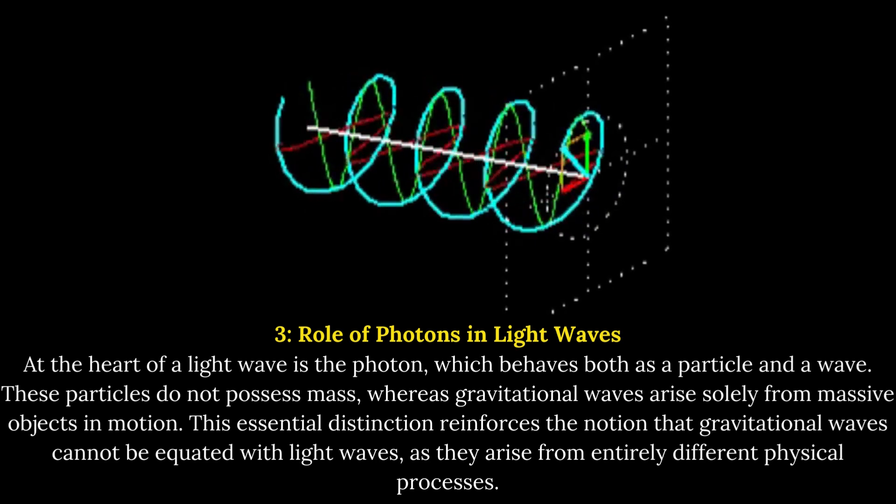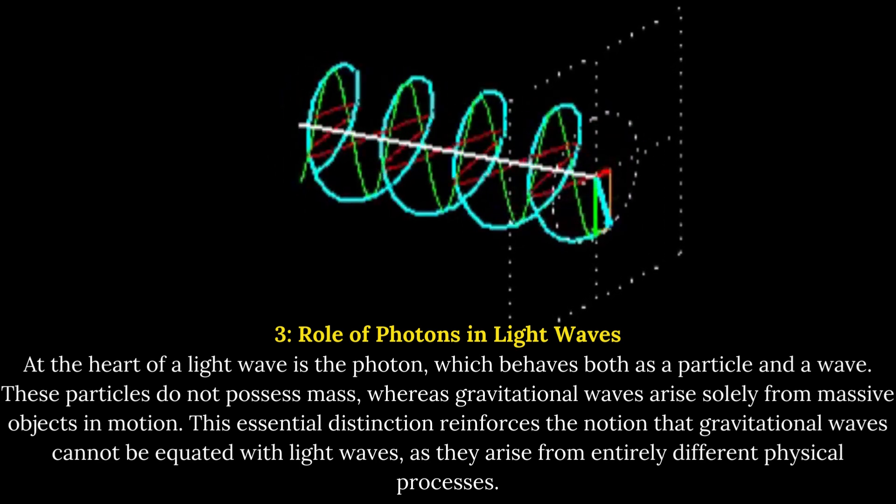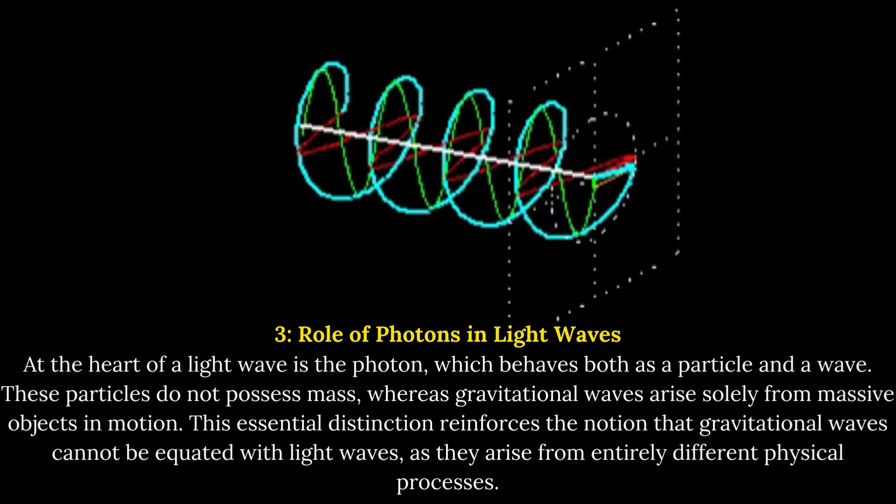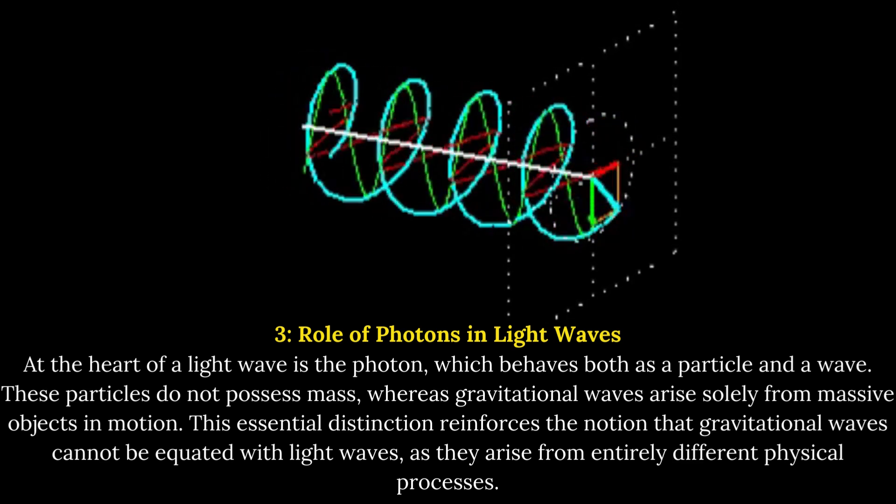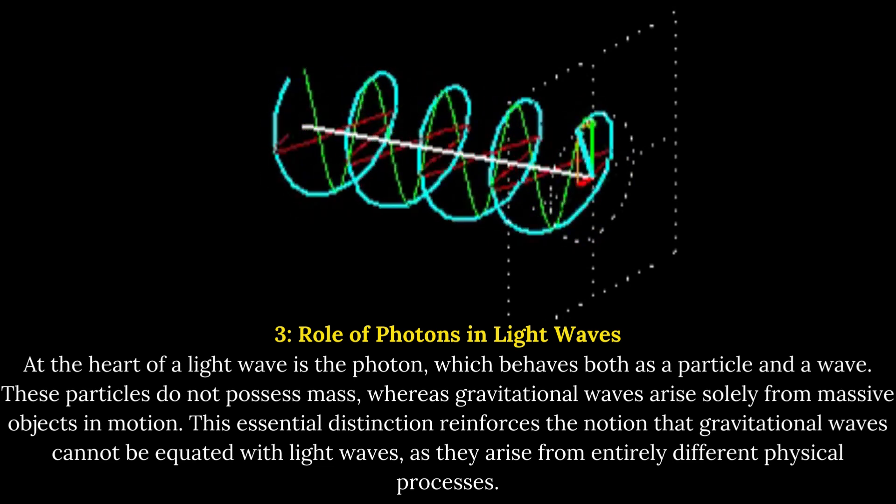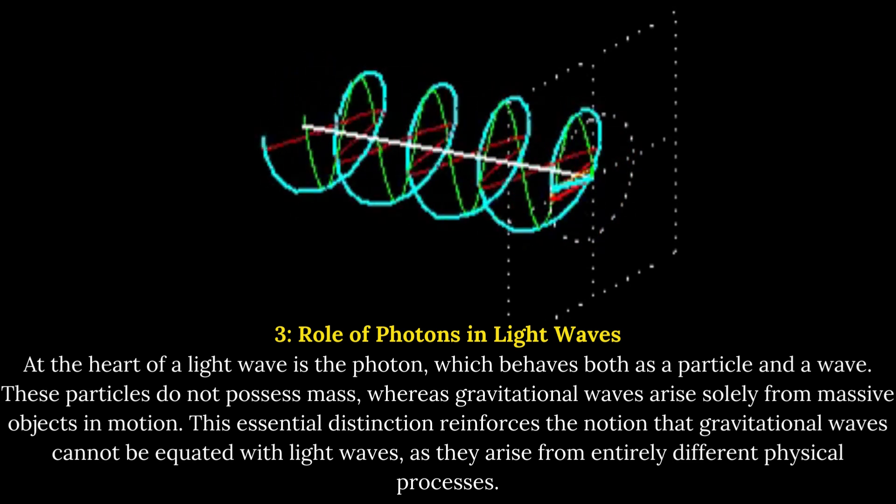Role of Photons in Light Waves. At the heart of a light wave is the photon, which behaves both as a particle and a wave. These particles do not possess mass, whereas gravitational waves arise solely from massive objects in motion.